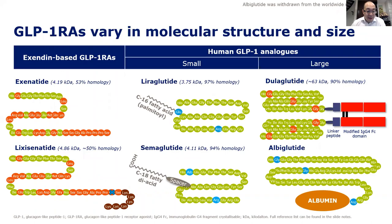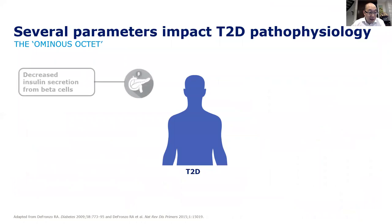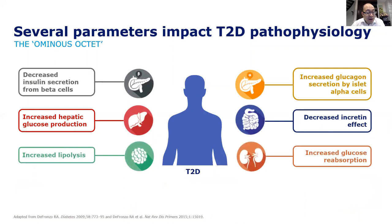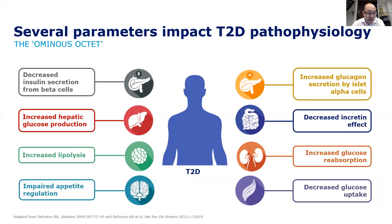There are lots of ways to manipulate the GLP hormone to make it last longer, which is why there are so many agents in this class. Looking at the broader pathophysiology of type 2 diabetes: decreased insulin secretion from beta cells leads to increased hepatic glucose production; increased lipolysis means increased free fatty acids; there's impaired appetite regulation; alpha cells secrete glucagon unchecked when beta cells have dysfunction; decreased incretin effect from intestines; increased reabsorption; and increased insulin resistance leading to decreased glucose uptake in muscles.